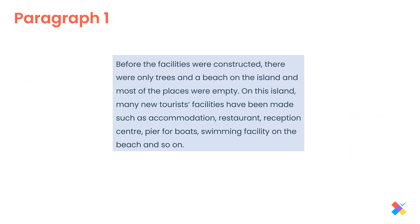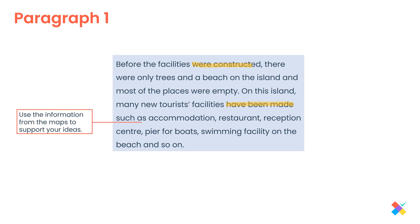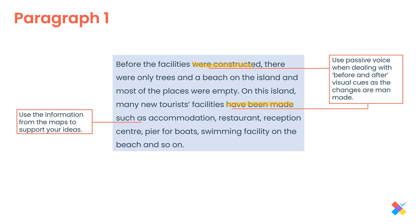Now we're moving on to the main body. As I said, three to four sentences — here there are two. We have 'before the facilities were constructed' — passive voice. And then 'have been made' — again, passive voice, because the process is man-made. Use the information from the maps to support your ideas: accommodation where they sleep, restaurant where they eat, reception, pier for boats, swimming, and so on — all described using passive voice to show exactly how the changes have been made.